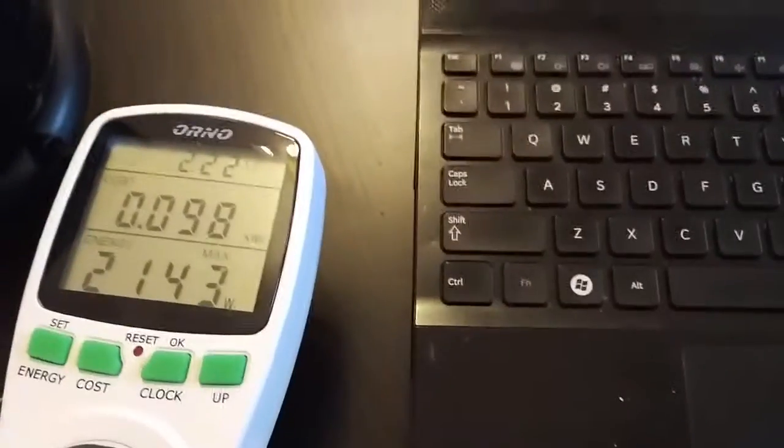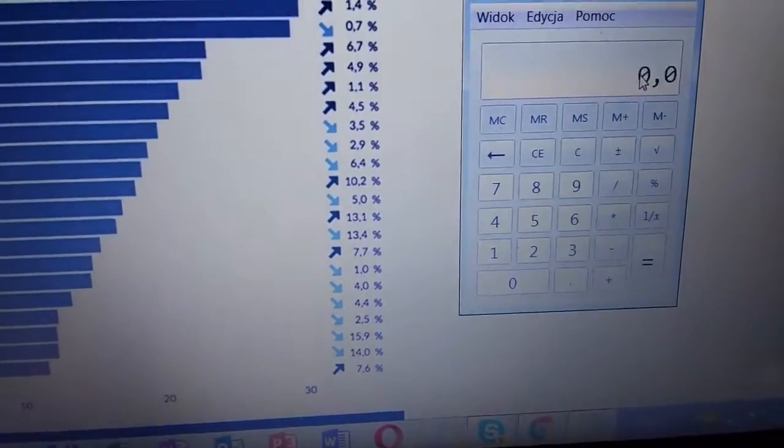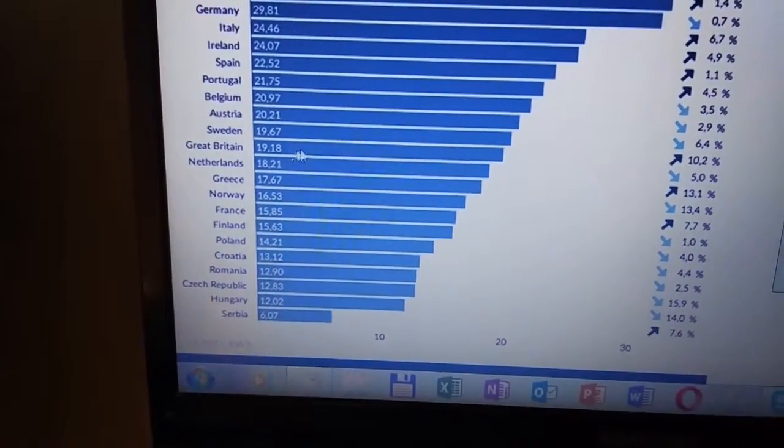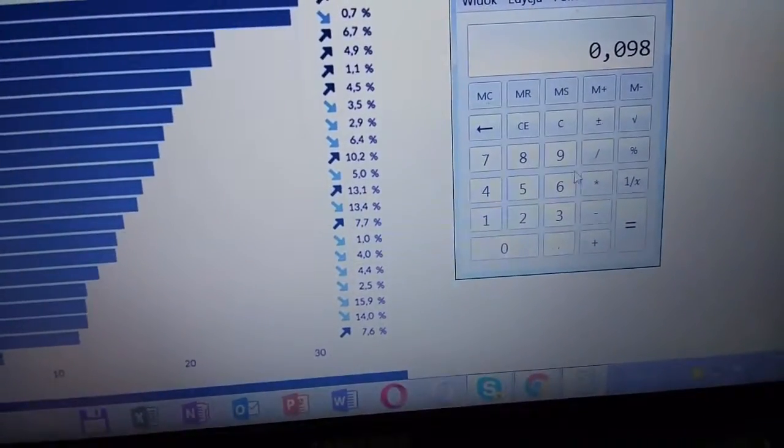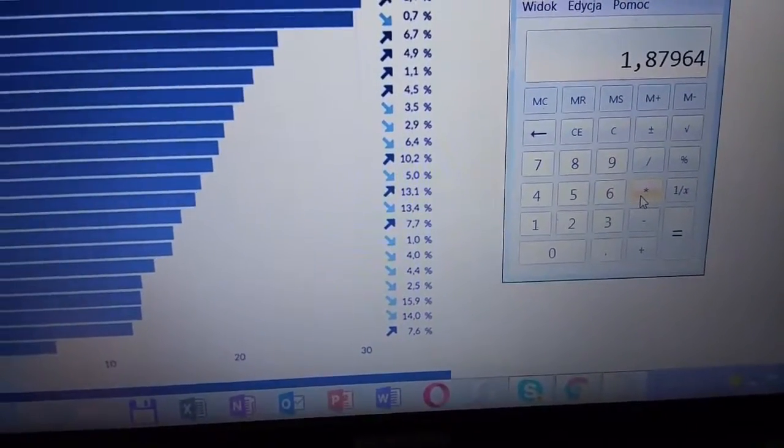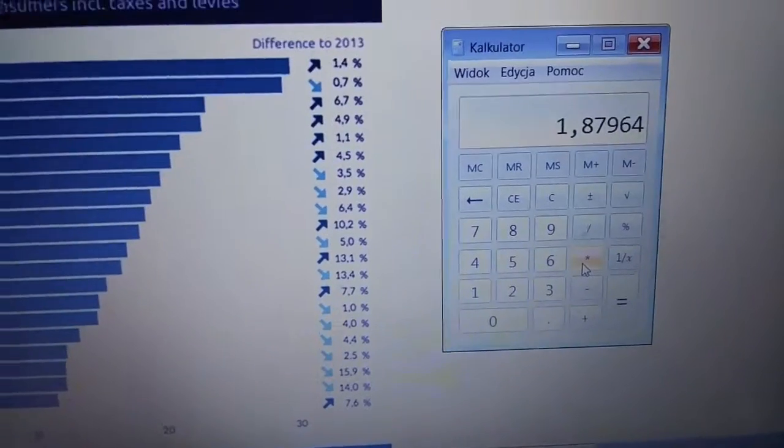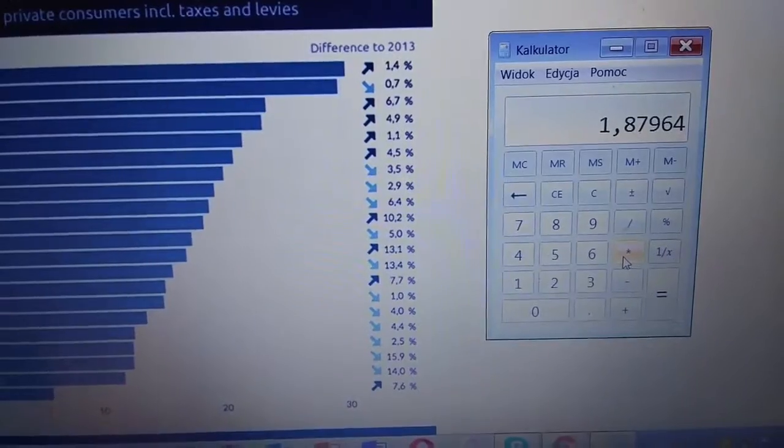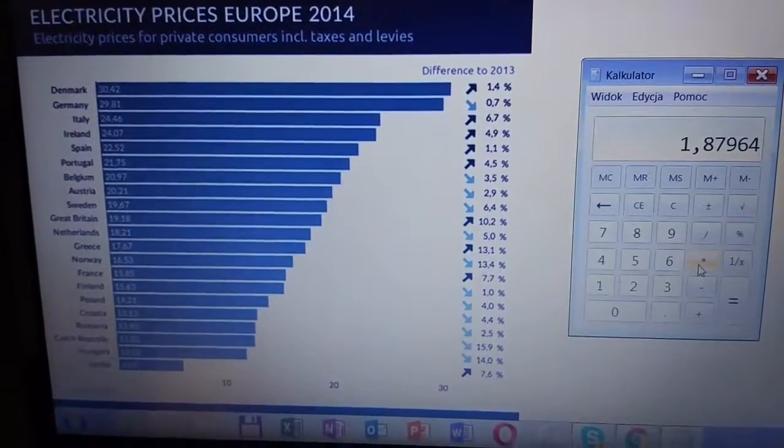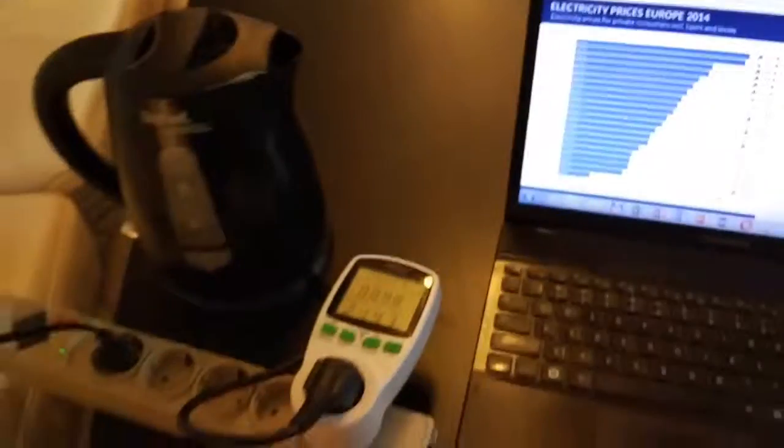So in this case, we can calculate—we take 0.098 and multiply it. For example, for Great Britain it's 19.18. We multiply 0.098 times 19.18 cents, so in England it costs 1.87 American cents to boil one liter of water. Of course, we've got the prices from 2014, but it's easy to compare in the future how much it costs. Okay, thank you very much.